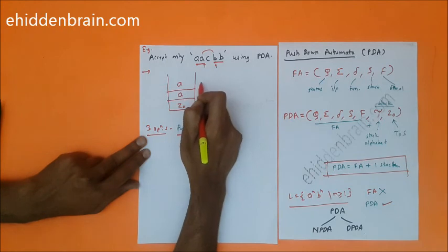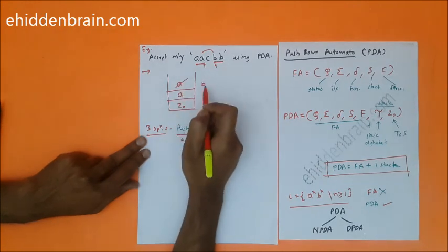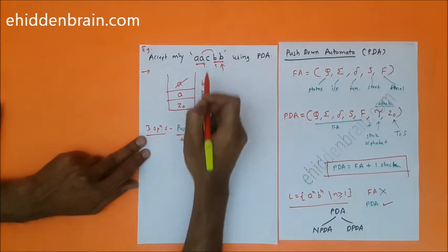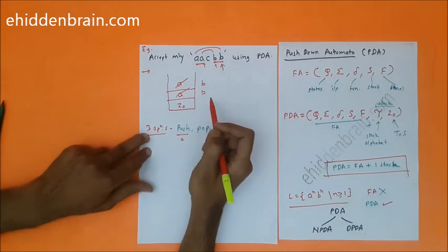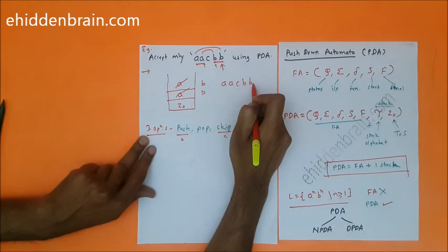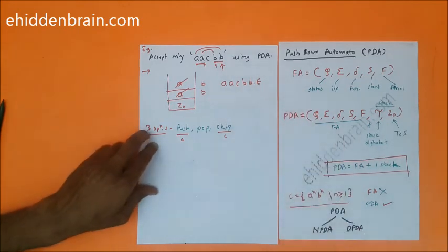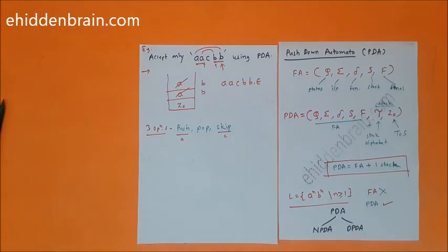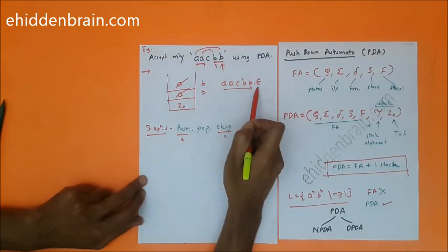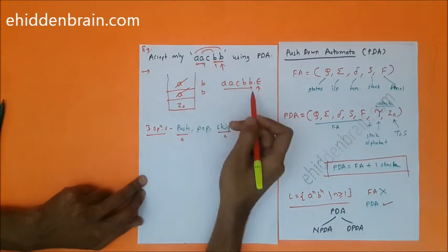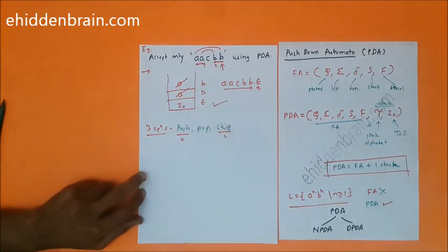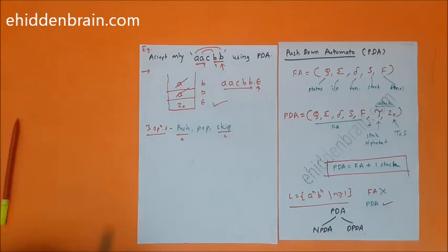For the second 'b', again the top of the stack is 'a', so I pop it. Now the string 'aacbb' is completely consumed. At the end, epsilon is there (appending epsilon doesn't change the string). What you get is epsilon, and you check it against z0. If epsilon matches z0 — meaning the stack is empty — then the string is accepted.